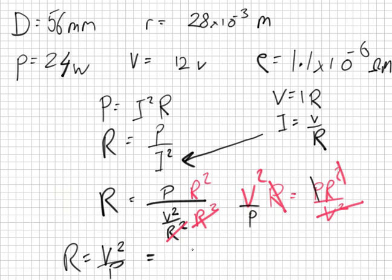So after all that algebra, we end up with the formula R equals V squared over P, which would be 144 over 24. What's that? It's 6.